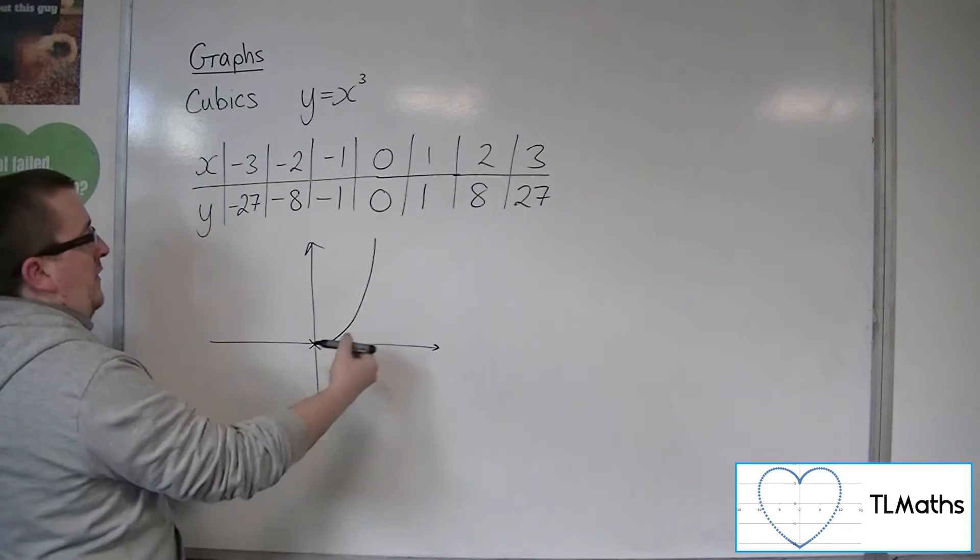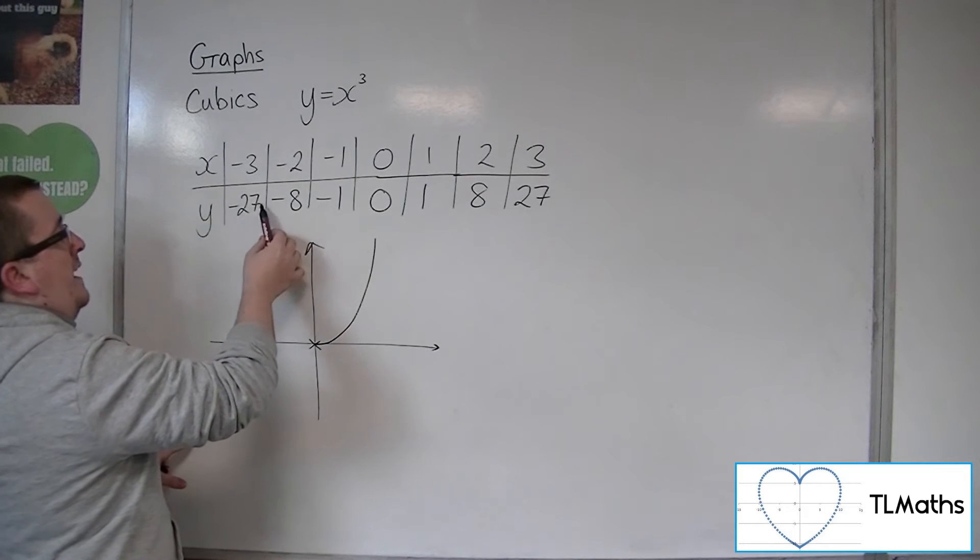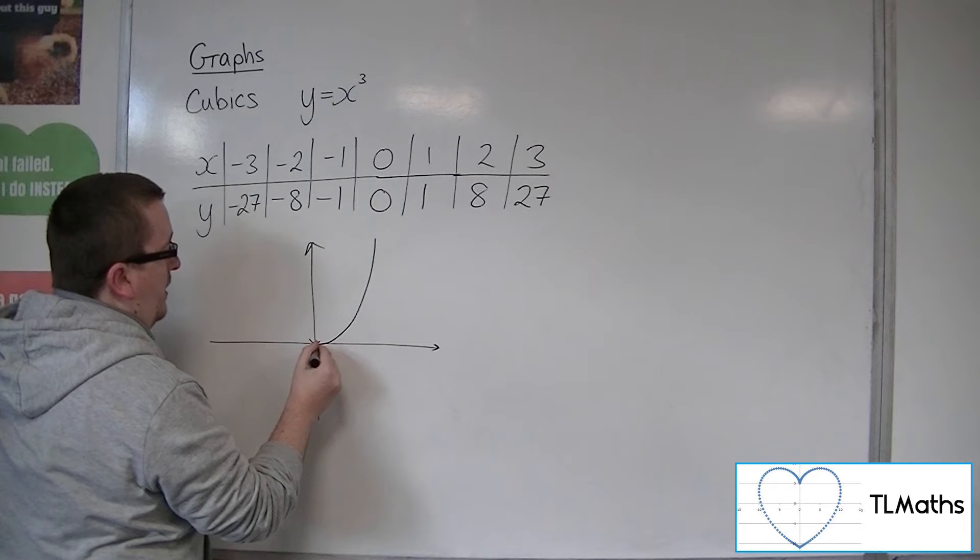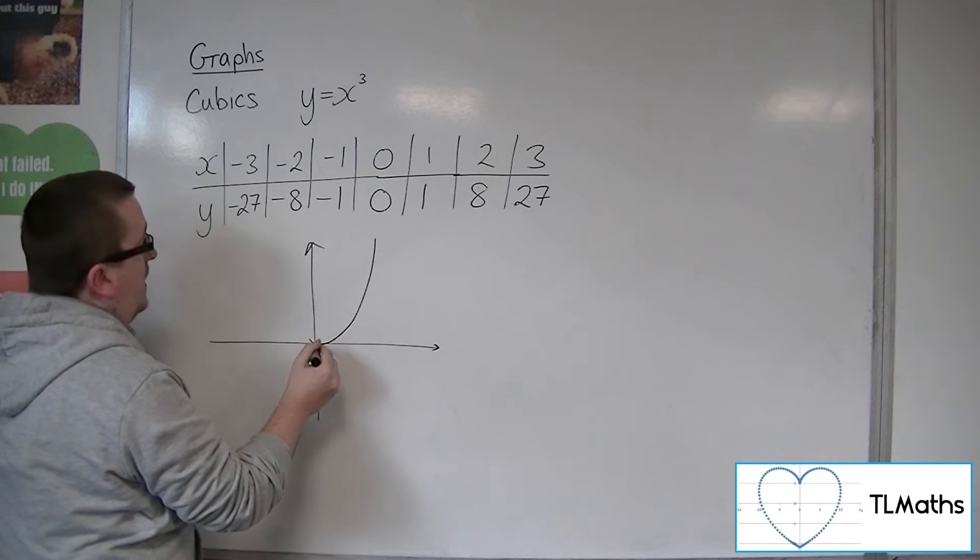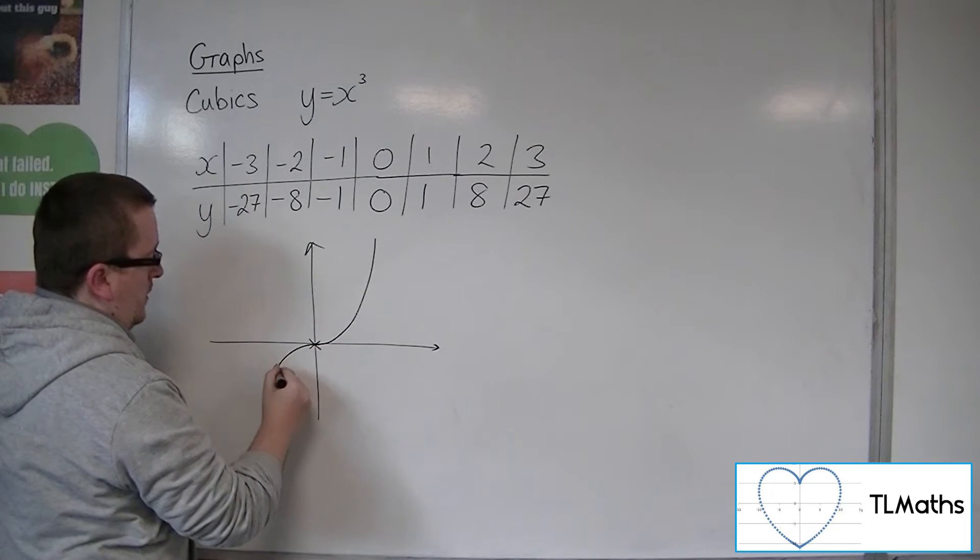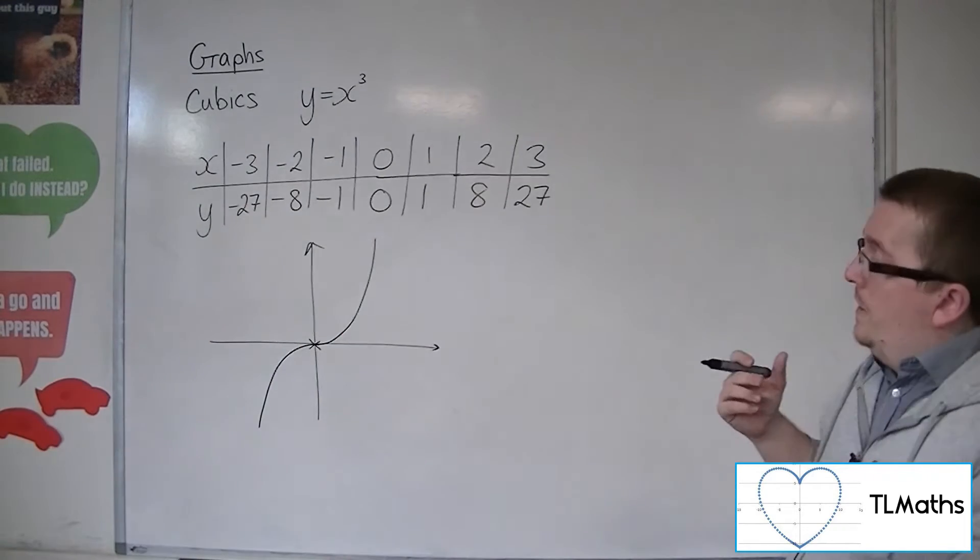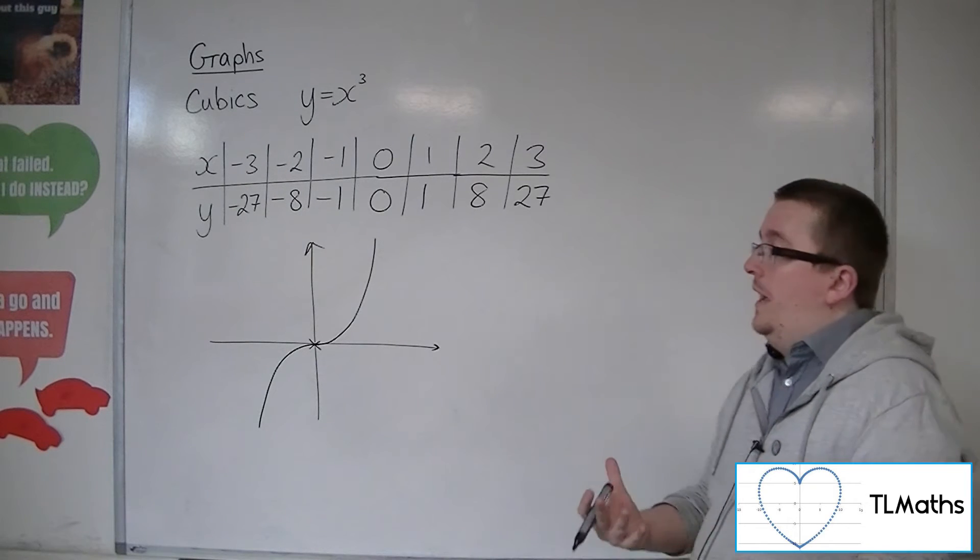And then as x is going to the left, so minus 1, minus 2, minus 3, y is decreasing very rapidly as well. So it goes through minus 1, minus 1, which is down here. Minus 2, minus 8, minus 3, minus 27, and so decreases very rapidly. And so this is what y is equal to x cubed actually looks like.